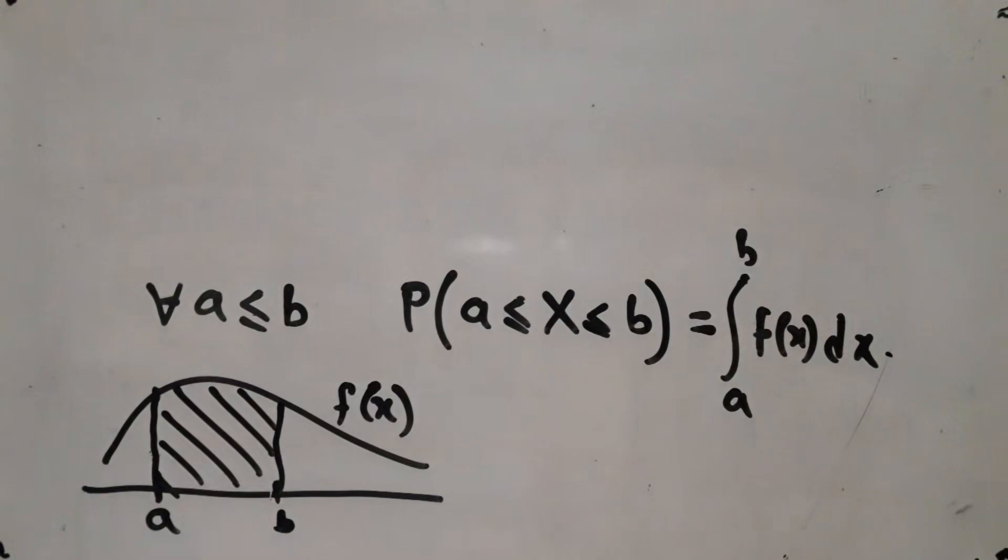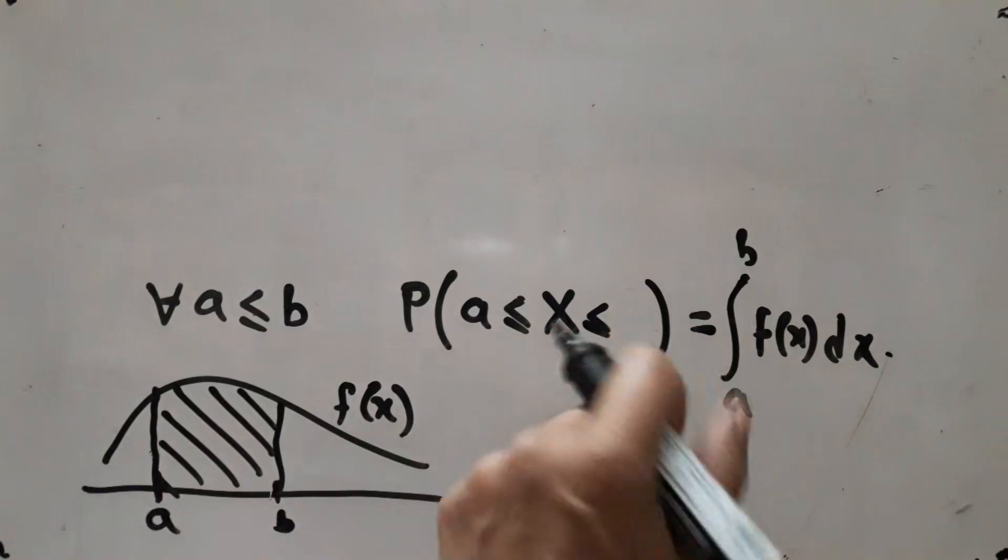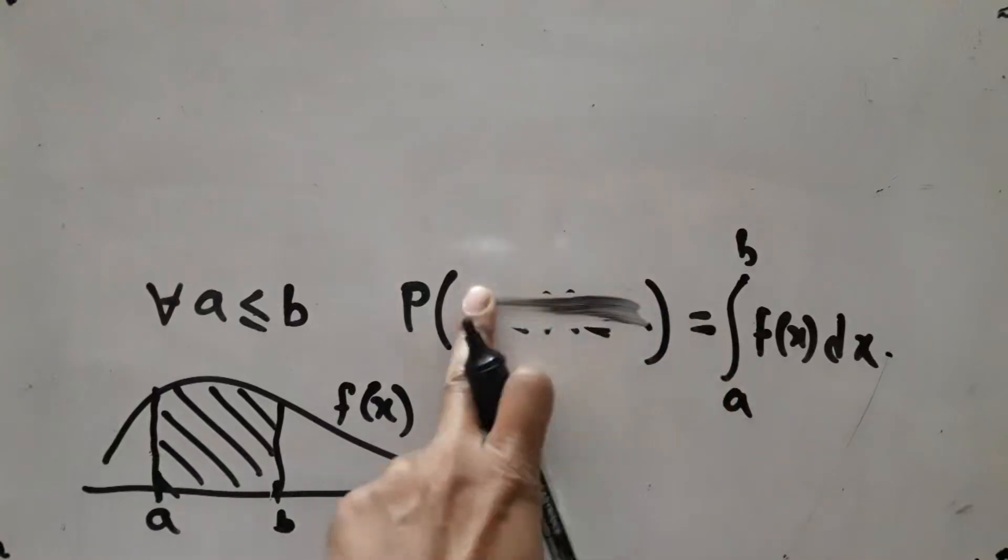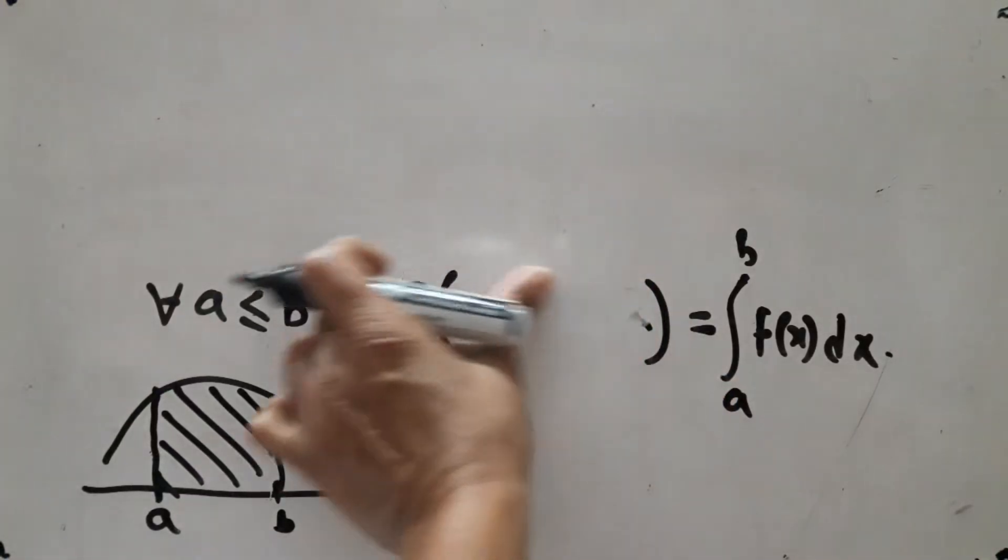Certain properties of the function f are immediately obvious, or I should say properties of the random variable X are immediately obvious. First of all, if I put b equal to a, which is allowed, I will get X equal to a here.